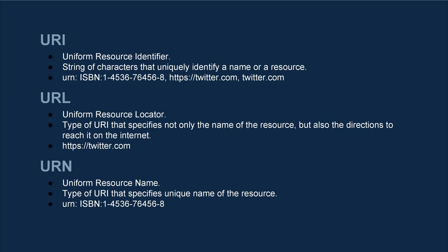URI stands for Uniform Resource Identifier. It is a string of characters that uniquely identify a name or a resource on the internet. URI identifies a resource by name, location, or both. URIs have two specializations, or subtypes, which are called Uniform Resource Locator and Uniform Resource Name, URN.